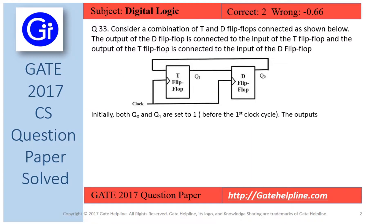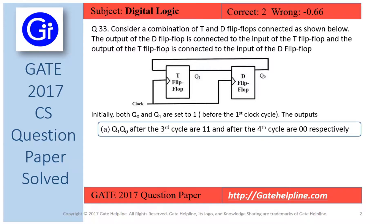Question number 33: consider a combination of T and D flip-flops connected as shown below. The output of the D flip-flop is connected to the input of the T flip-flop, and the output of the T flip-flop is connected to the input of the D flip-flop. Initially both Q0 and Q1 are set to 1 before the first clock cycle. The options for Q1, Q0 after the third cycle are 11 and after the fourth cycle are 00 respectively.